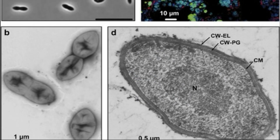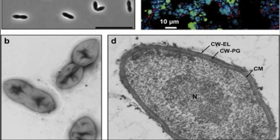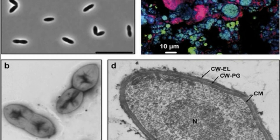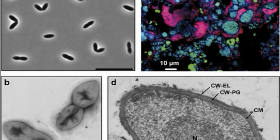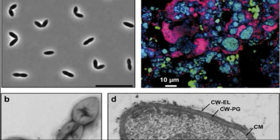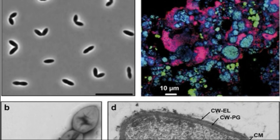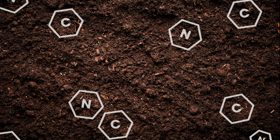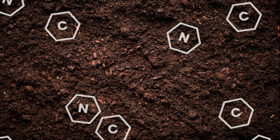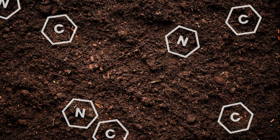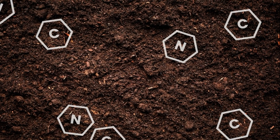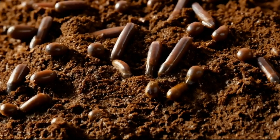Some bacteria produce urease, an enzyme that breaks down urea into ammonia, so it is recommended to use inhibitors that slow down this process. This nitrification reaction is carried out by soil bacteria called nitrifiers. The process takes place in a neutral or slightly alkaline environment, so in acidic soils the population of nitrifying bacteria is low.